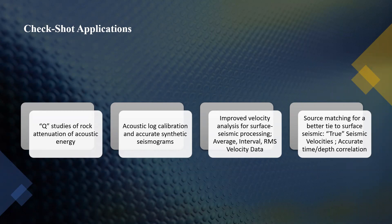The third application is it is used for improved velocity analysis for surface seismic data processing like average, interval, and RMS velocity data. The velocities are used in many data processing steps like NMO, migration, and stacking, which are obtained from RMS velocities picked during velocity analysis of surface seismic data. In surface seismic surveys, velocities are picked by indirect methods and therefore have more chance of uncertainty. It is also used for better tie to surface seismic data because it has more accurate velocity and true seismic velocities.